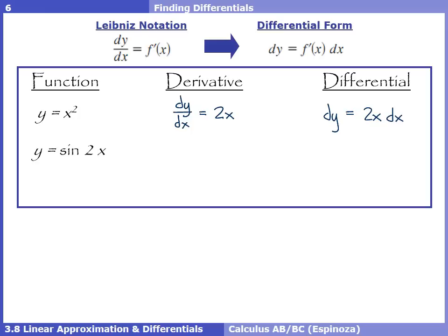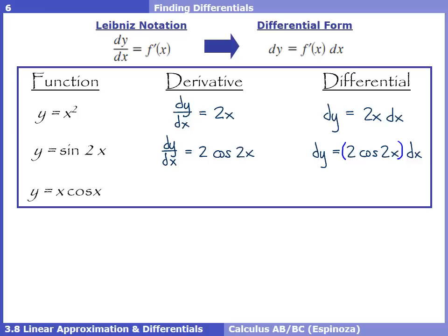When you have a function multiplied by another function, you need the product rule. Applying the product rule to x·cos(x) gives dy/dx = -x sin(x) + cos(x), and the differential form is simply dy = (-x sin(x) + cos(x)) dx — just move dx to the other side.